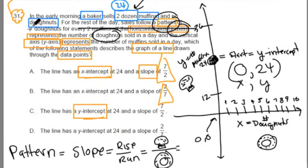And our rise to run relationship says seven doughnuts for every two muffins. Now remember, doughnuts is our x's on our x-axis. And muffins are our y's on the y-axis.